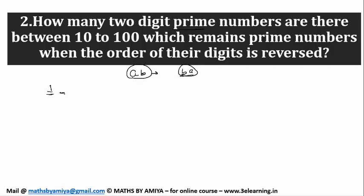Number one can start. This is perfectly fine. Number two cannot start. Because if two starts, then on reversing it will be even number. So it cannot be. Number one can start.